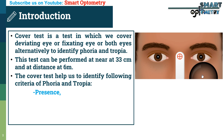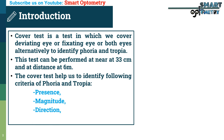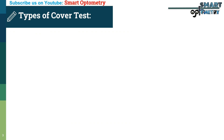These criteria include: the magnitude of phoria and tropia — whether it is high degree or low degree; the direction of phoria and tropia — whether it is eso, exo, hyper, or hypo; and the amount of phoria and tropia, which can be identified in prism diopters with the prism bar cover test.